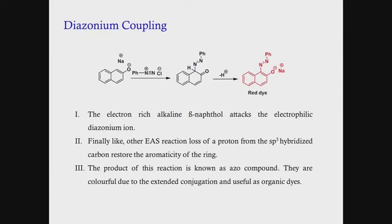The next step is to take beta-naphthol in sodium hydroxide so that it generates the naphthoxide anion. We then add the prepared diazonium salt to it. The electron-rich alkaline beta-naphthol immediately attacks the electrophilic diazonium ion in an electrophilic aromatic substitution reaction. The next step is deprotonation from the sp3 hybridized carbon, which regenerates the aromatic ring.